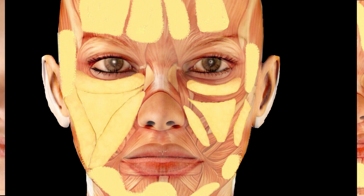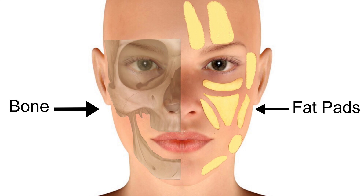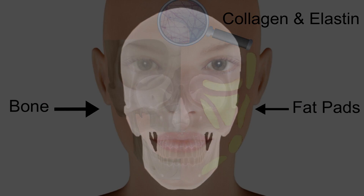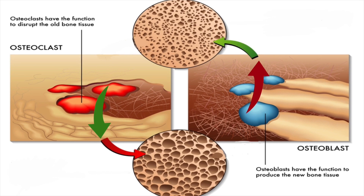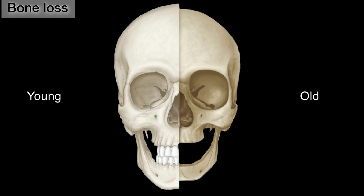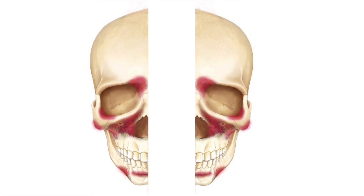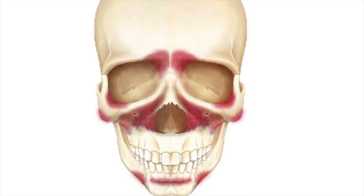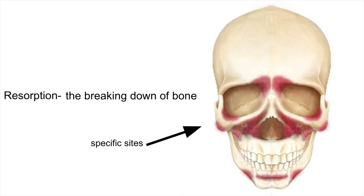Let's travel below the skin surface to discover how we age. There are three main things that we lose with time that significantly contribute to aging. Starting from the deepest level, working our way up to the superficial level, it's bone, fat pads, and collagen and elastin within the skin. Our bones are continuously being broken down and remodeled. When we're young, we're forming new bone faster than we're breaking down bone. But as we age, our bones get less dense with time because we're now breaking down bone at a faster rate than we're making new bone. Within the past decade, with the use of three-dimensional CAT scan analysis, we have a more accurate understanding of bone loss to the facial skeleton, including selective resorption, or the breaking down of bone at specific sites.